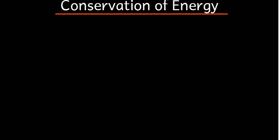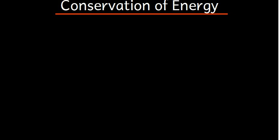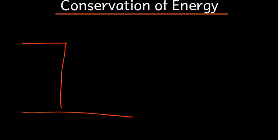In this tutorial we are going to talk about conservation of energy. Conservation of energy states that energy cannot be formed or created, but it can be transformed from one state to another. To illustrate this, consider a tall building with a ball on top at height H.